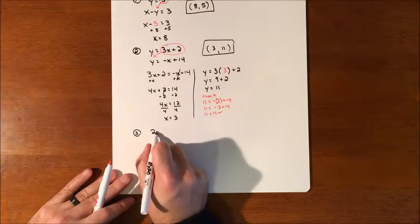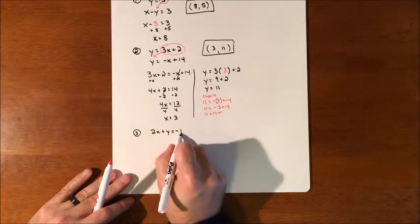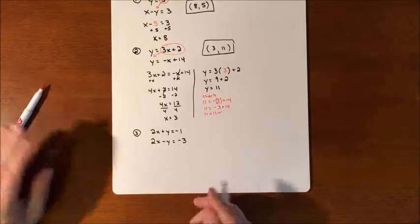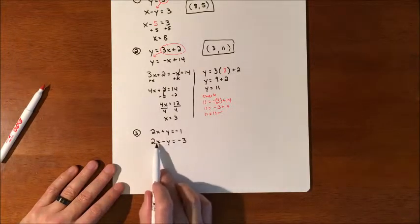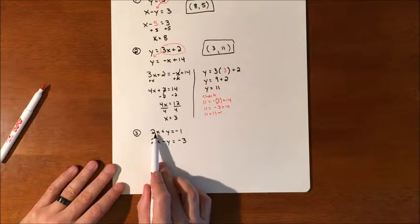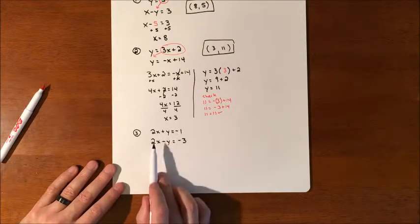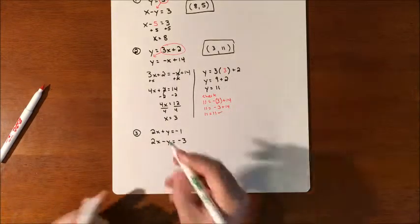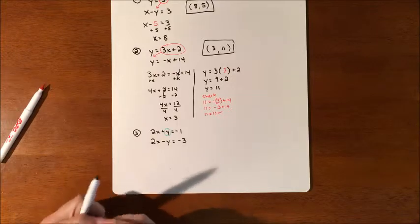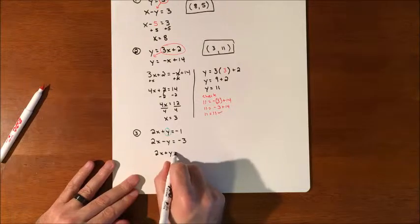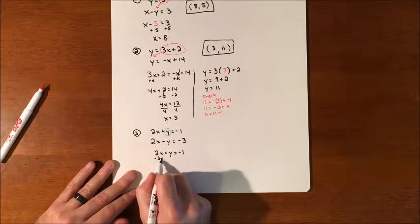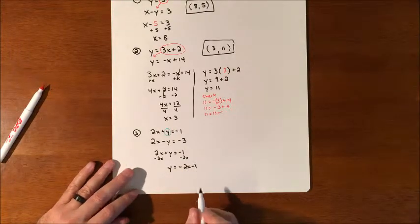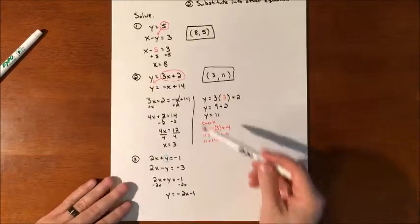Next example: 2x plus y equals negative 1, and 2x minus y equals negative 3. This time we don't have a variable by itself, so we need to do some manipulation. We have four variables to choose from. Getting either x by itself would require dividing by 2, creating fractions. That y would be the easiest variable to isolate, so we solve the first equation for y.